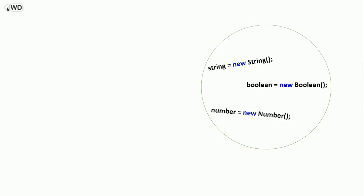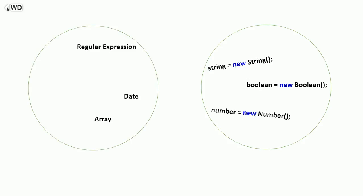In JavaScript, a string, a boolean (false or true), a number can always be objects. An array, date, regular expressions, math functions, and objects are always objects. Actually, in JavaScript, objects are king.